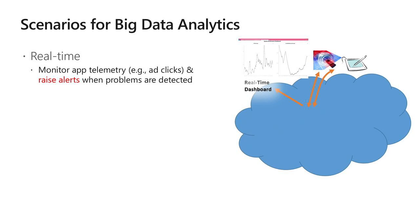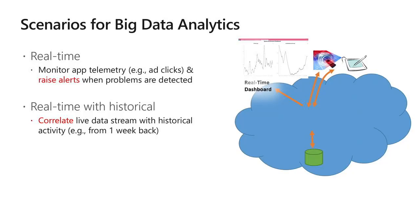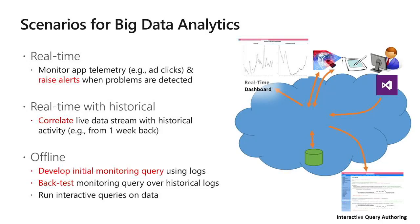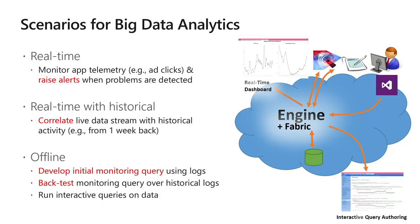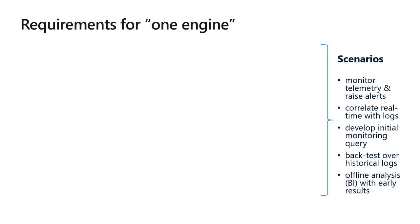Another use case was combining real-time with historical data — taking real-time streams and correlating with what happened, say, a week back to detect anomalies. Offline analytics was also very important, where logs collected in data centers had to be used for back-testing real-time queries or doing time series analysis on offline logs. There was a need for an engine that could support all of these applications.